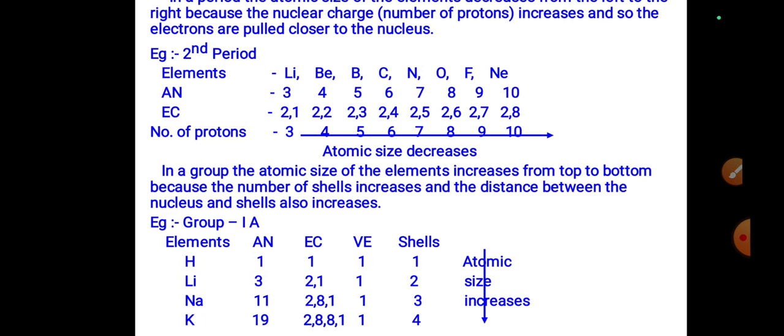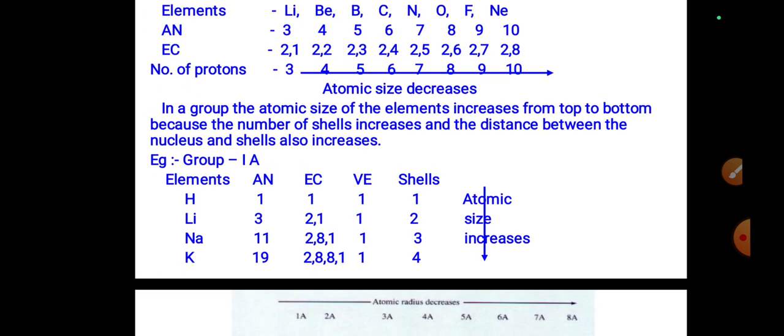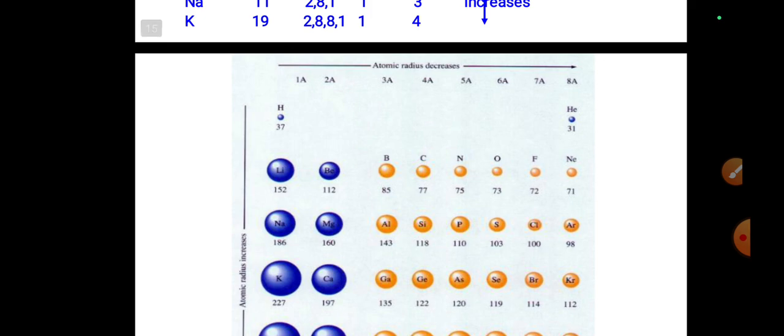In a period, going from left to right, atomic size decreases. In a group, the atomic size of elements increases from top to bottom because the number of shells increases, and the distance between the nucleus and the outermost shell also increases.